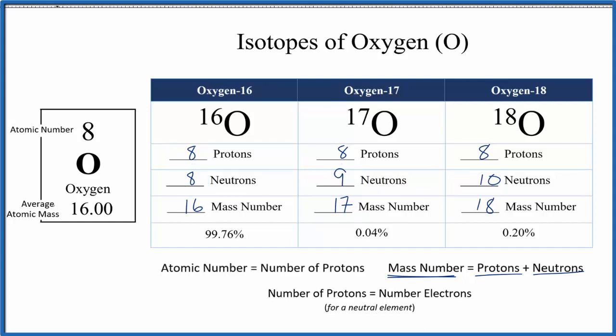On the periodic table, we have what's called the average atomic mass. That's an average of these isotopes based on abundance. So when we look at oxygen-16, if we had a sample of oxygen, almost all of it would be atoms with eight neutrons, this oxygen-16. A little bit would be oxygen-17 with nine neutrons.